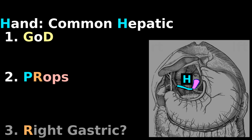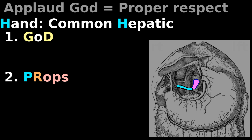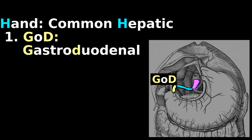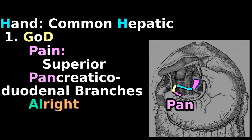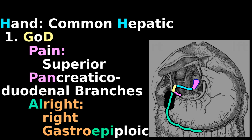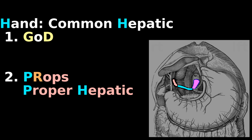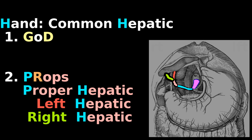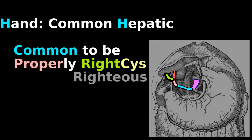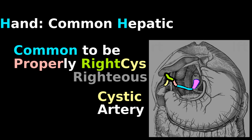The immediate things can be remembered by God Props. God means gastroduodenal, and God makes your pain all right: superior pancreaticoduodenal and right gastroepiploic. Props means proper hepatic artery, which splits into the left and right hepatic arteries. Also, it's common to be properly righteous — so the arteries go common hepatic, proper hepatic, right hepatic, cystic.